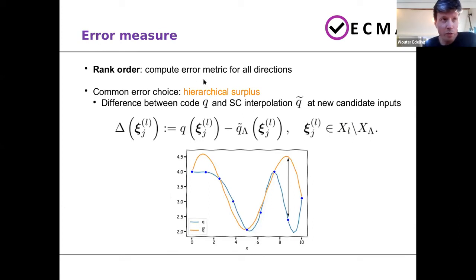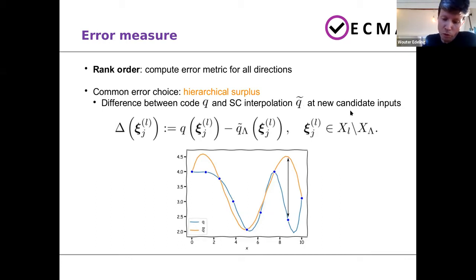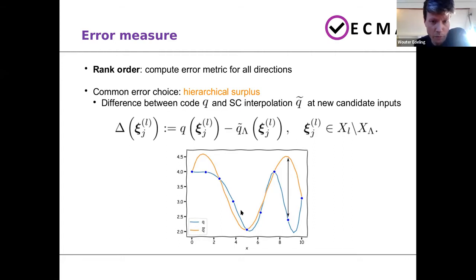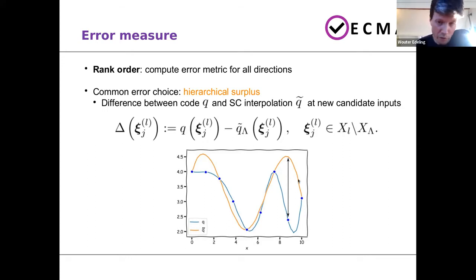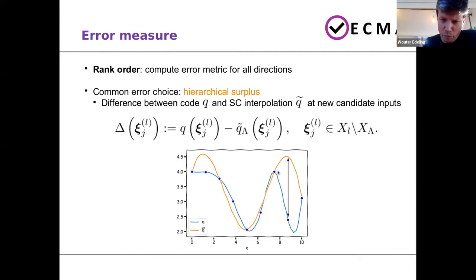To compute an error metric, you have different choices. The most common is the hierarchical surplus — the difference between your actual code output Q and the stochastic collocation surrogate model Q-tilde, evaluated at new locations in input space. This picture shows a 1D example: the blue line is your actual code, the orange one is my surrogate Q-tilde constructed using only a subset of points. I compute candidate directions and compute the difference at every location — the highest difference is the sampling point that gets accepted. You can generalize this to higher dimensions.